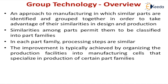These parts are classified into part families. In each part family, the processing steps are going to be similar — the entire set of processes is going to be similar for the entire part family. The improvement is typically achieved by organizing the production facilities into cells that specialize in production of the part family. The entire lathe machines form a cell, the entire shaping machines form a cell. So a group of components irrespective of dimensions will move to the lathe cell, then the rectangular components go to the shaping cell.